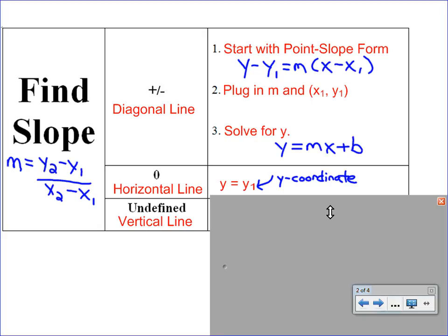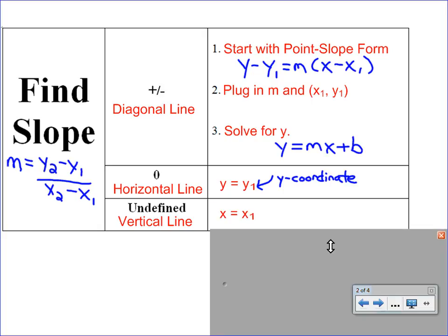For vertical lines, if you have an undefined slope, it's just the opposite — it's x equals x1. And x1 is simply the x coordinate from either one of your ordered pairs. You'll actually start to notice that those x coordinates are going to be the same, so that will be a clue that you have a vertical line.